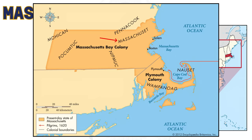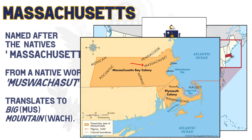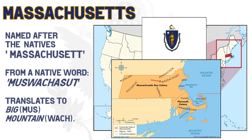Massachusetts takes us back into native origins. The Massachusetts Bay Colony was named after the indigenous population, whose name likely came from a native word, Musouac Chassout — I'm really sorry I'm mispronouncing all of these, but I just couldn't find the proper pronunciation — and this term directly translates to 'big mountain.'